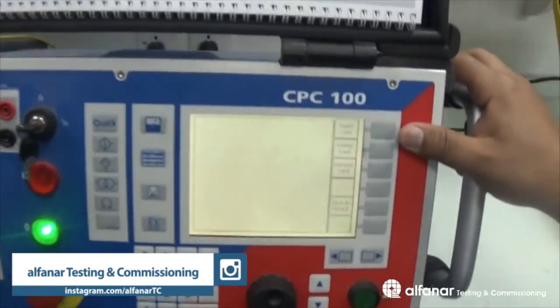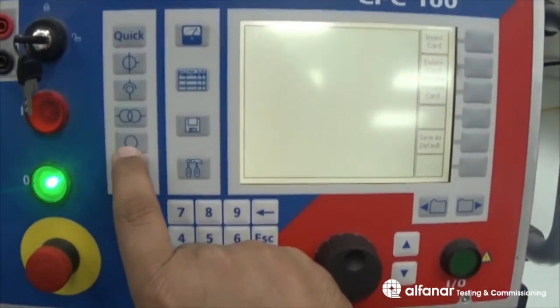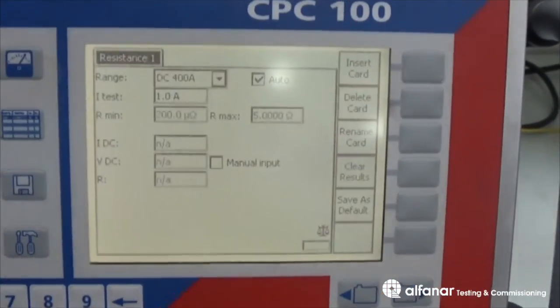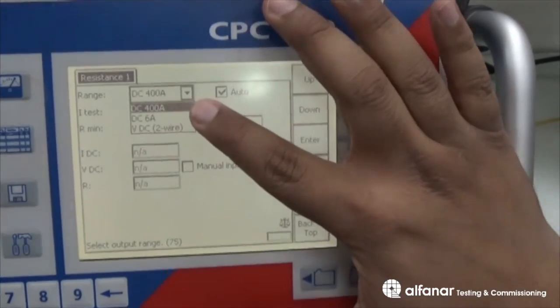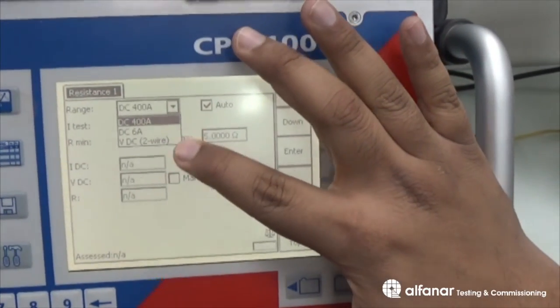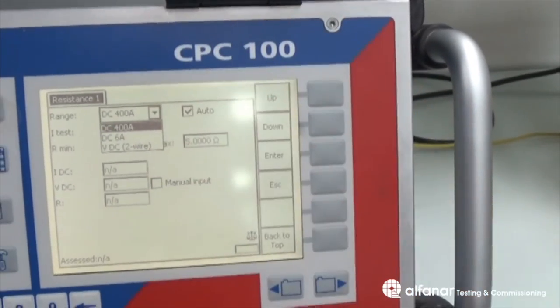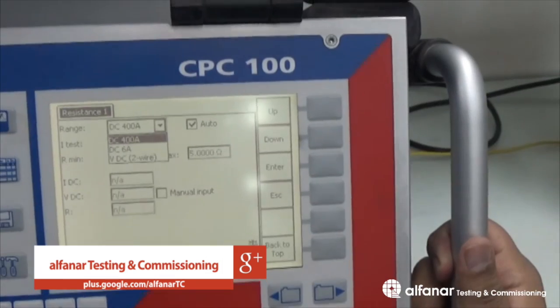Then, we will use our CBC local software using the resistance card. I will choose resistance. We have here three types of ranges, DC400, DC6A and VDC to wire. Actually, we are using the DC400A to allow us to inject our current range which is approximately 100A.